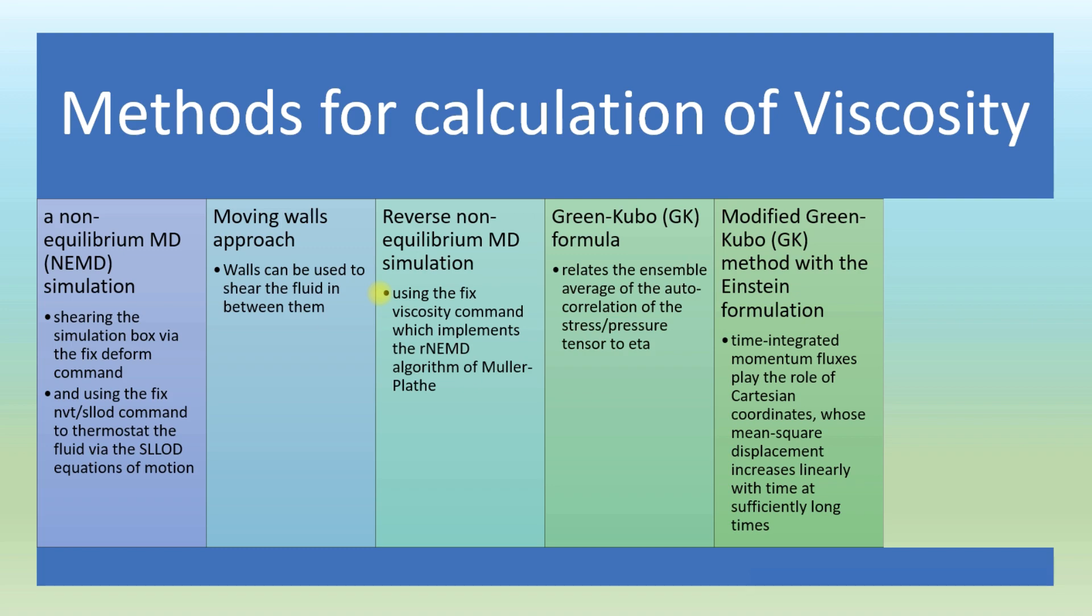The fifth method is related to the Green-Kubo method but uses the Einstein formulation, analogous to the Einstein mean square displacement formulation for self-diffusivity. The time-integrated momentum flux plays the role of the Cartesian coordinate whose mean square displacement increases linearly with time at sufficiently long times.